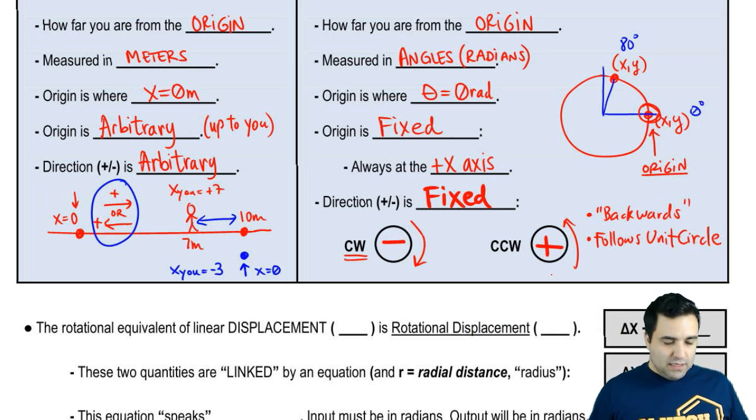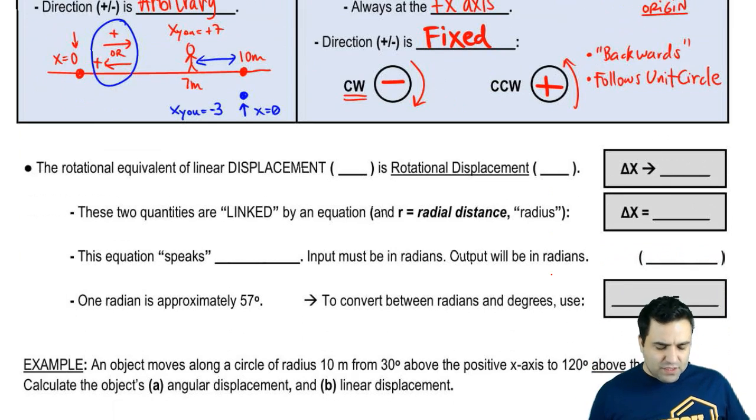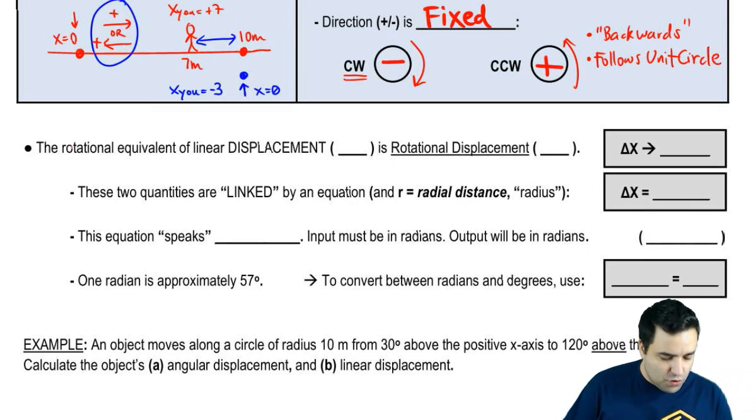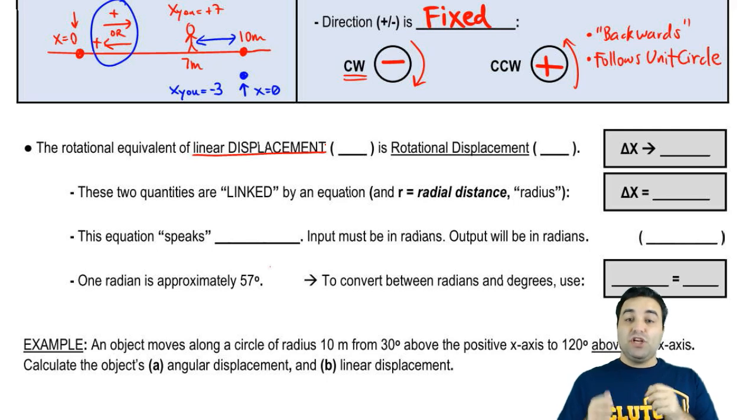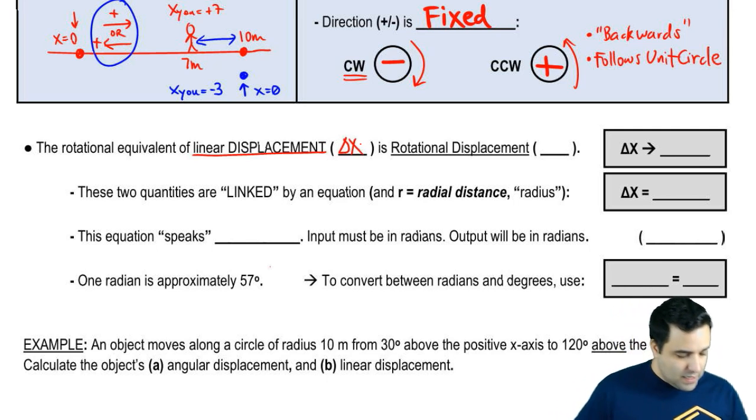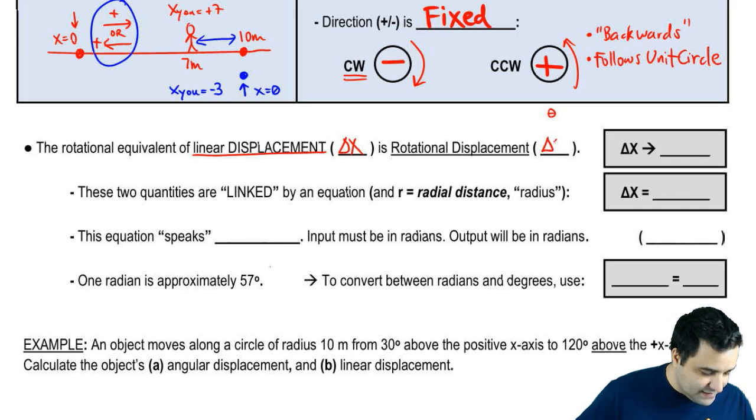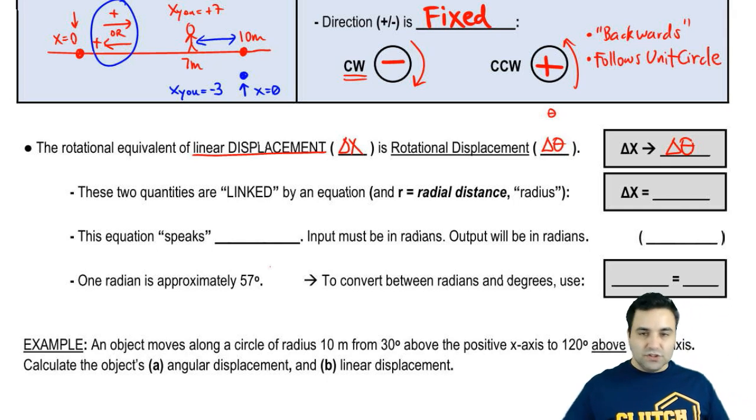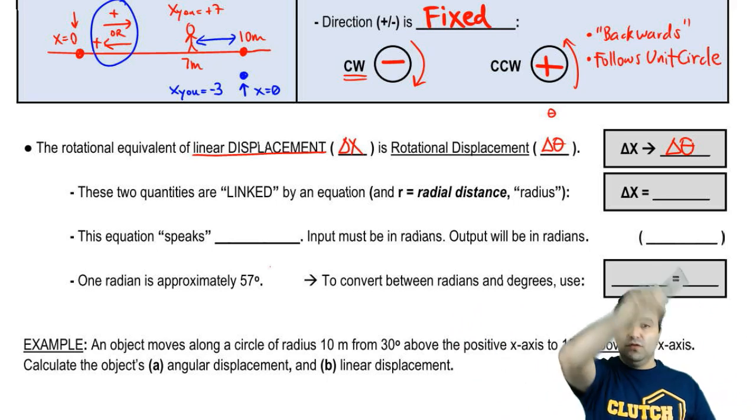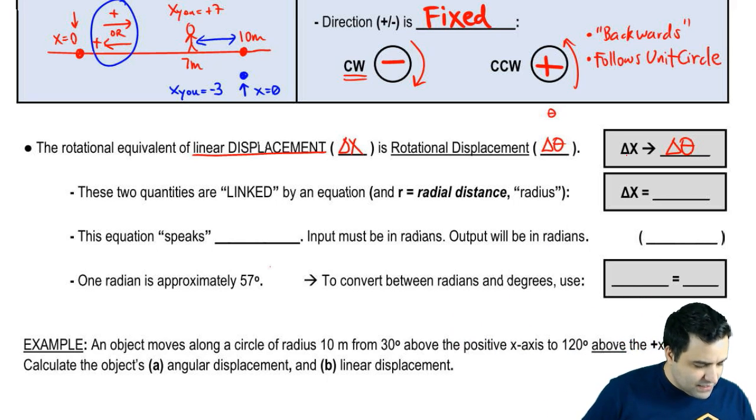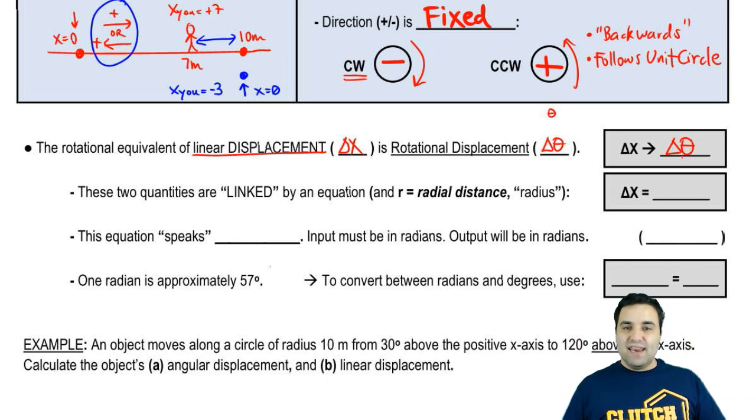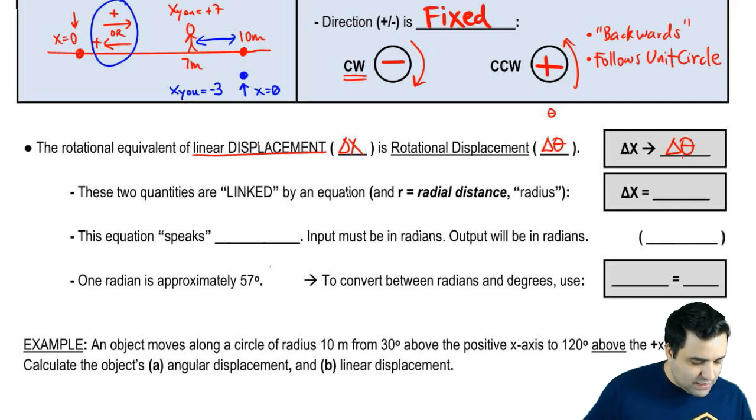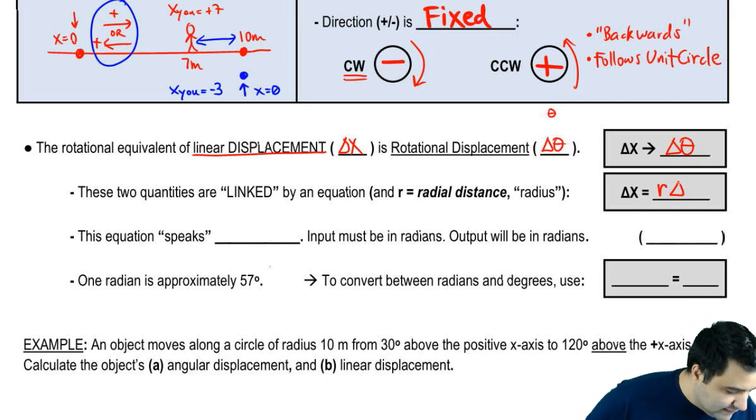So those are the key differences between linear position and rotational position. We're going to quickly talk about the displacement now, the rotational equivalent of linear displacement. So position is x. Displacement is changing position, which is delta x. Rotational position was theta. So rotational displacement is simply delta theta. So instead of delta x, the equivalent is delta theta. So if you're moving this way, we measure your delta x. If you're moving this way, we measure your delta theta. And these two quantities here, delta x and delta theta, are linked. They're connected. They can be converted from one to the other using the following equation.